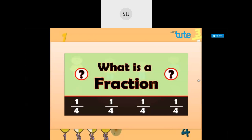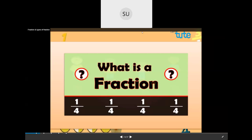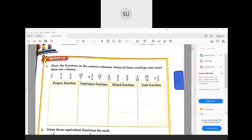You have different types of fractions. We'll solve a few problems from your textbook as a warm-up exercise. Fractions are on page number 137 in your textbooks. Question one says: place the fractions in the correct columns — some of these could go into more than one column. We have to place the given fractions in the proper column depending on what type of fractions they are. The four columns are: proper fraction, improper fraction, mixed, and unit fraction.